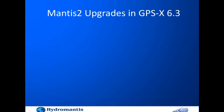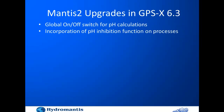Some of these updates — I'll list them one by one. The first is a global on/off switch for pH calculations. MANCIS II has a pH calculation functionality, which in the previous version was always on. In the latest version, we allow you to switch it off if you don't need pH calculations. So you can switch them off and set the pH directly from the beginning.